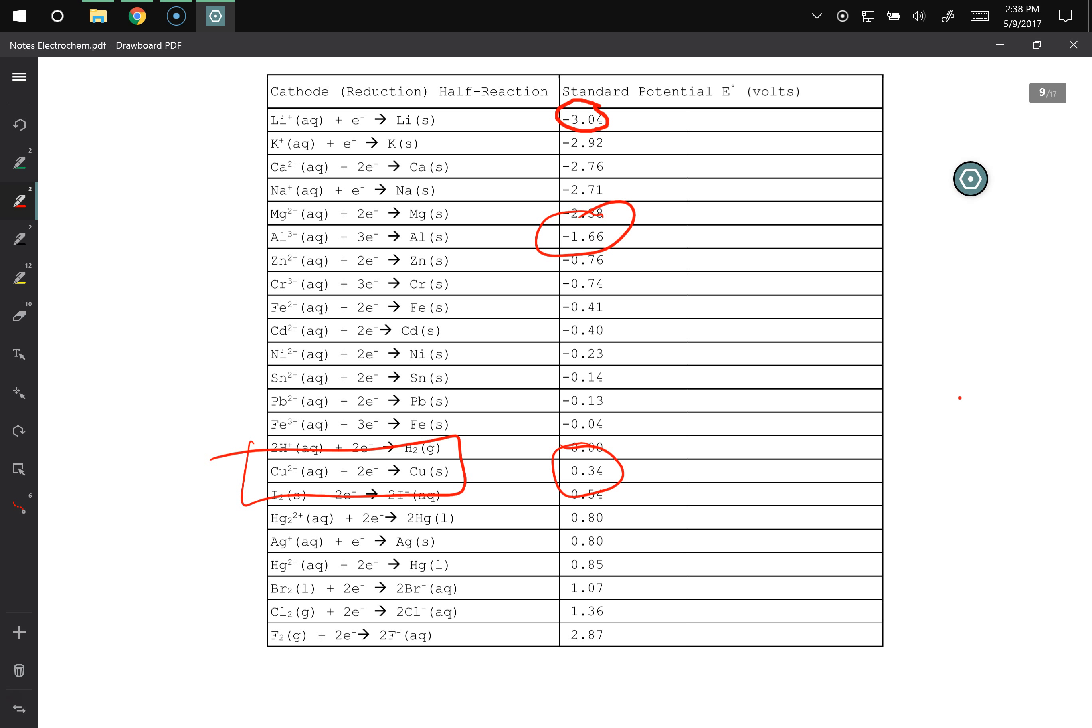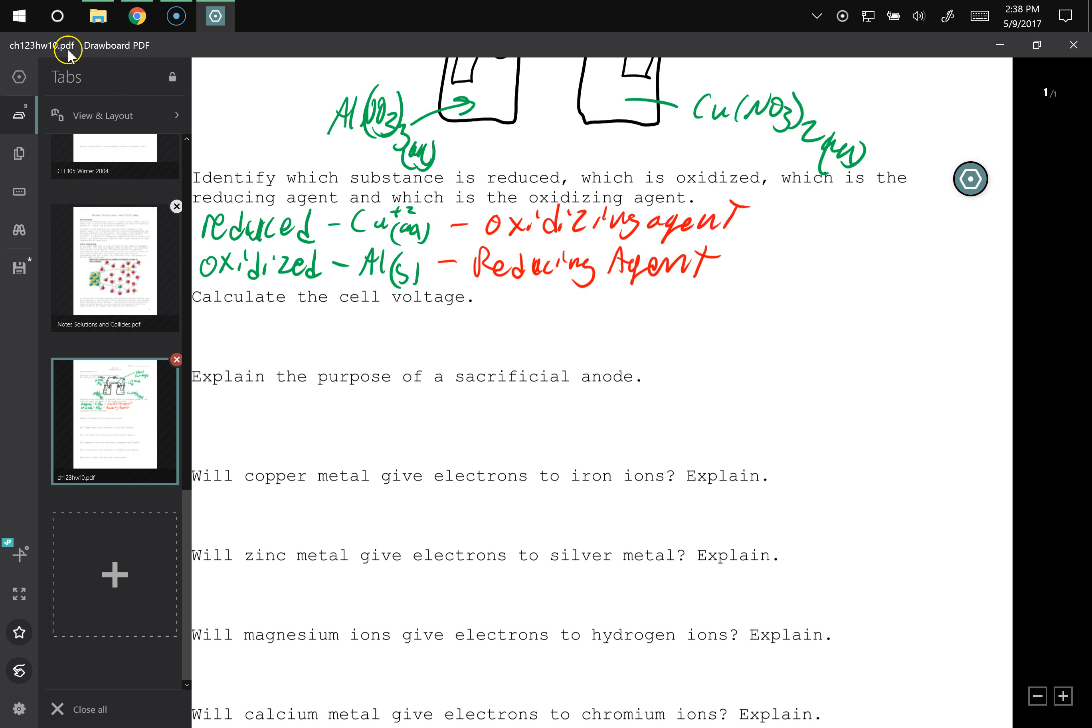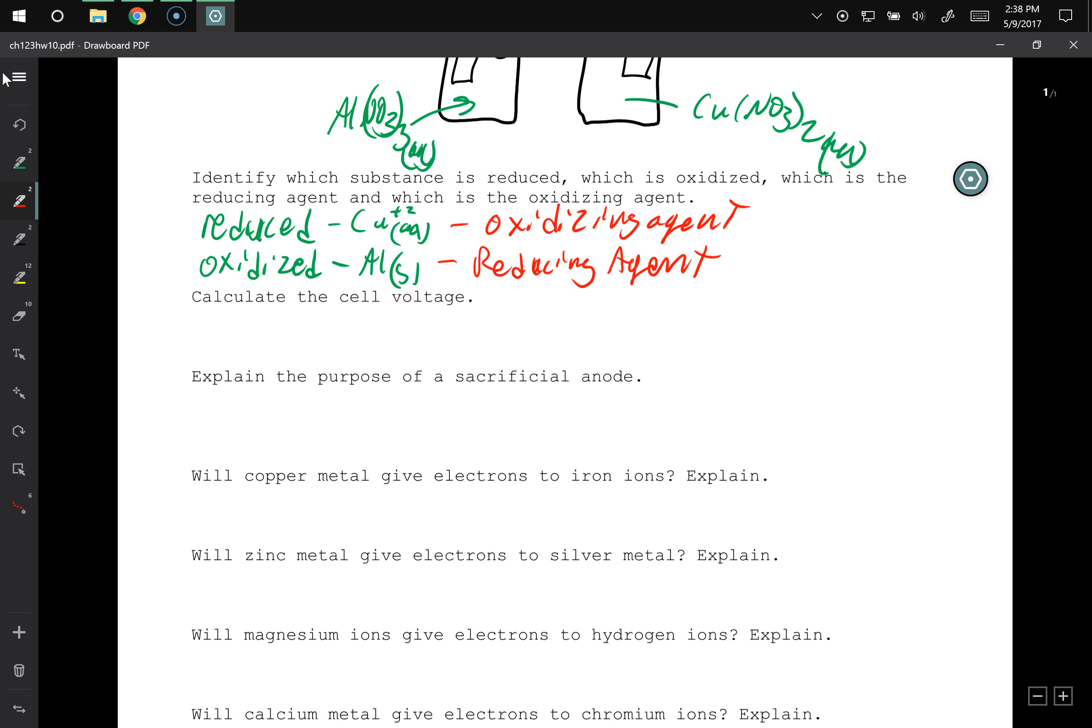Yes, it is. This one is not, right? I don't have aluminum ions turning into aluminum solid. I do have copper ions turning into aluminum solid. So this one is correct, and this one needs to be the positive 1.66. So let's go back to that. So I've got 1.66 volts plus 0.34 volts.